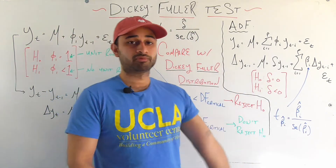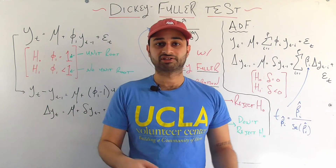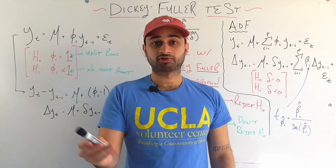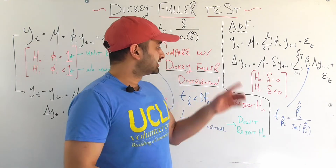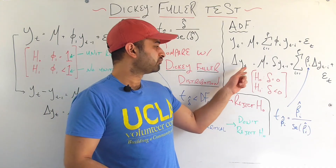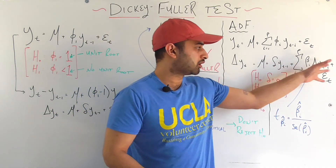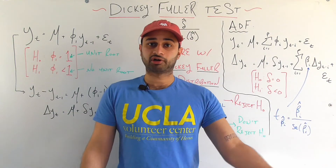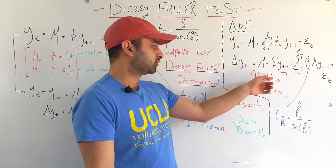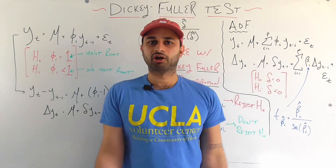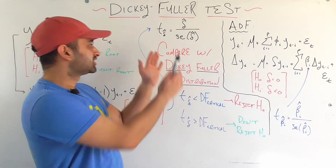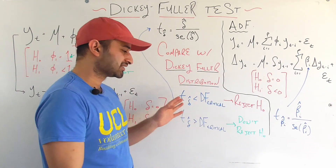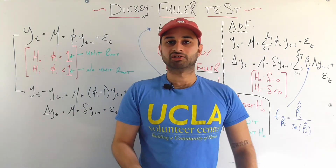The augmented Dickey-Fuller test starts with the assumption that the time series is not a simple AR(1) model but a more complicated AR(p) model. We begin with the same transformation — subtracting y_{t-1} from both sides — giving us delta y_t equals mu plus delta times y_{t-1} plus all the additional lagged terms. The null and alternative hypotheses are exactly the same: testing whether delta equals 0 versus delta less than 0. We calculate the t-statistic for delta the same way and compare it against the same Dickey-Fuller distribution.